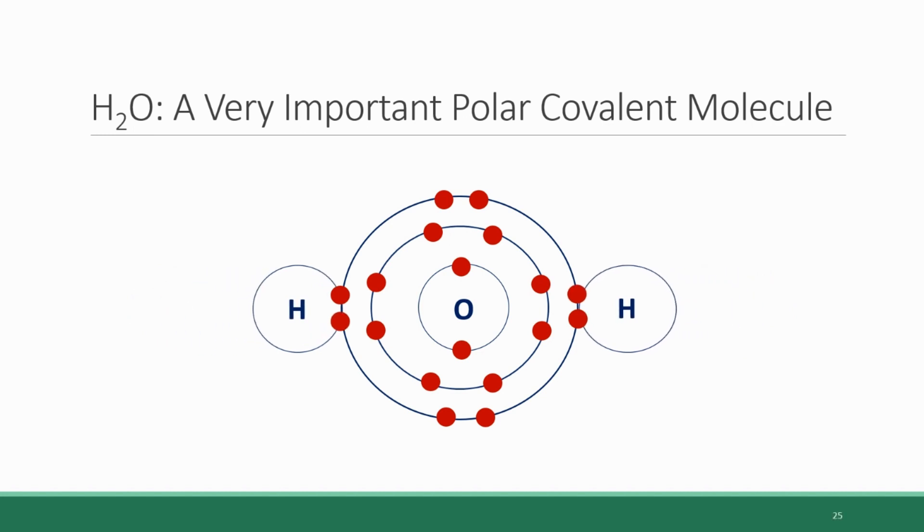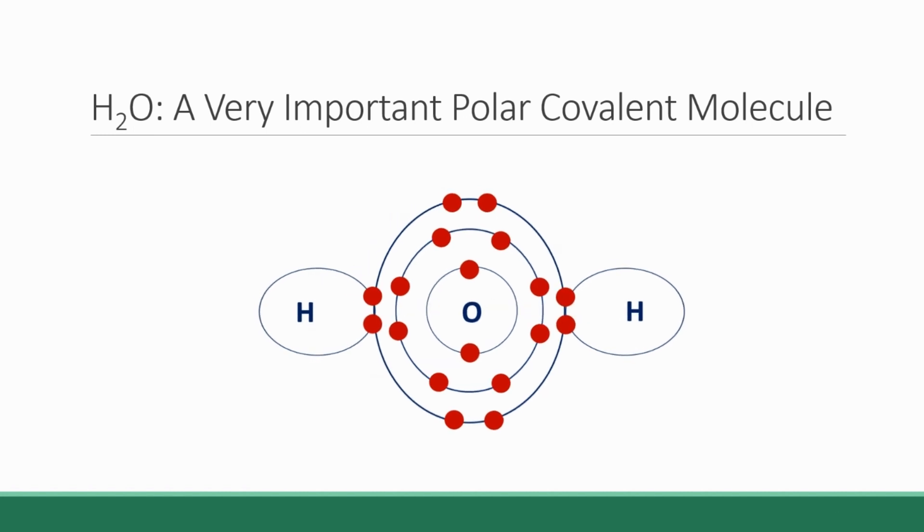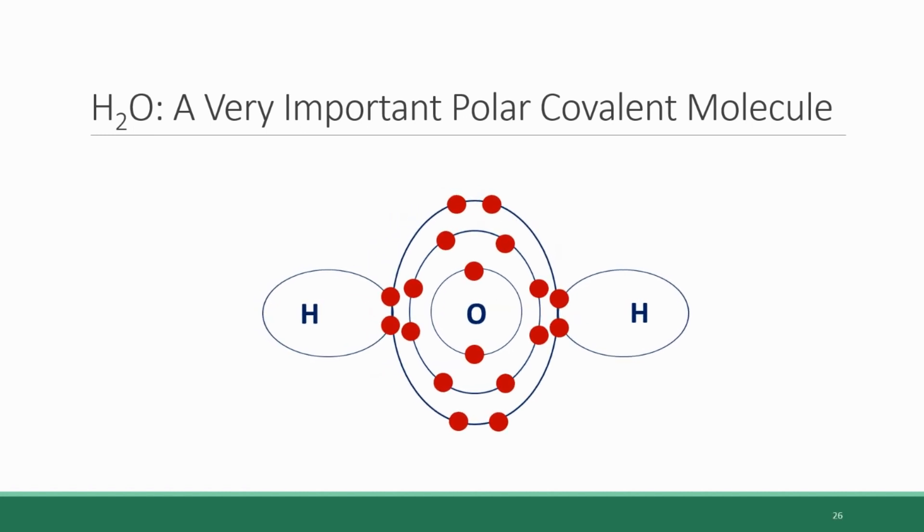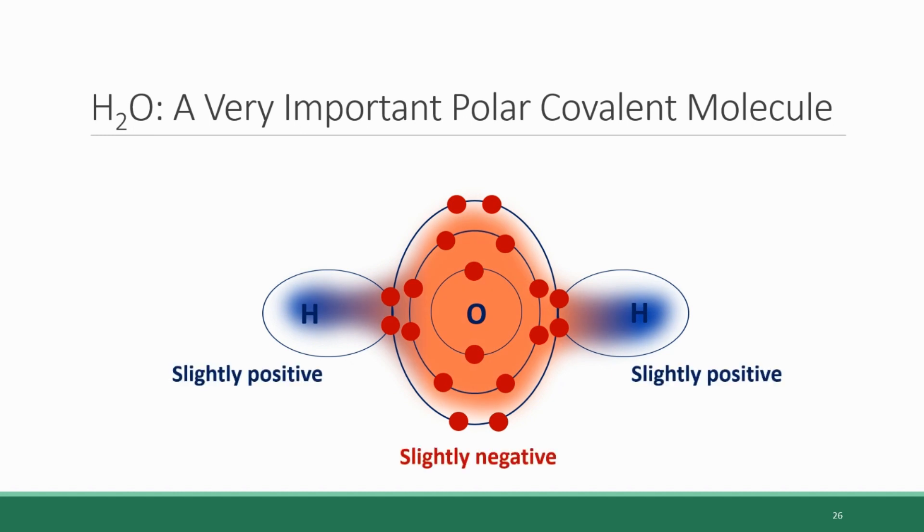This makes these bonds covalent, not ionic. The oxygen atom is a notoriously greedy element, more greedy for electrons than hydrogen, so it draws those electrons toward itself. You end up with a polar molecule—the hydrogen ends are each slightly positive with fewer electrons, while the oxygen is slightly negative with relatively more electrons.